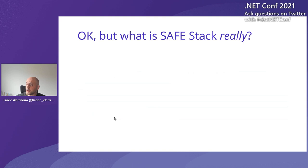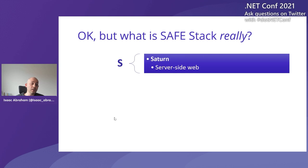So what is SafeStack really? It's an acronym standing for four things. The S stands for Saturn, which is what we use for server-side web programming. Saturn is just a set of extensions on top of ASP.NET Core. F-Sharp and SafeStack doesn't go away from standard .NET tech — it sits on top of it. Think of these as opt-in extensions that make ASP.NET really great from an F-Sharp perspective, while you still get all the standard features of ASP.NET Core.